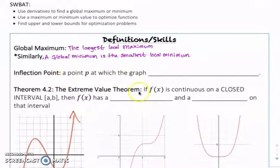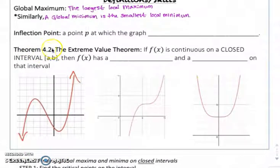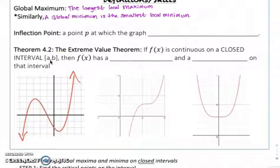And then inflection point — just a quick refresher — that's where the graph changes concavity. But what we really want to focus on today is Theorem 4.2, which is the Extreme Value Theorem. Basically what it says is that if f of x is continuous on a closed interval from a to b — so that means like from 2 to 5, or from 7 to 15, or from negative 5 to negative 2 — you are restricting the area you're looking at, and then f of x has to have a global maximum and also a global minimum.